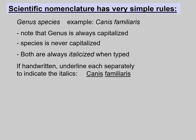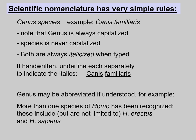To identify the genus or species, you need to be able to write scientific nomenclature. It has very simple rules. Note that genus is always capitalized and species is never capitalized, and when you type them, they are both always italicized. If you are handwriting, you underline each word separately to indicate italics. Genus may be abbreviated if it's understood in context — for example, 'more than one species of Homo has been recognized, including Homo erectus and Homo sapiens.' In writing, you could abbreviate the genus once it's understood what the capitalized italicized letter stands for.